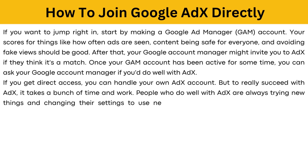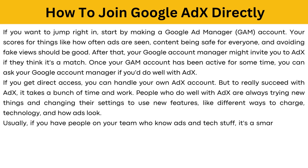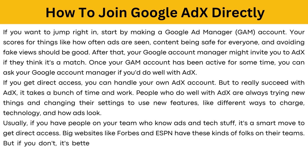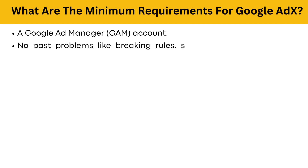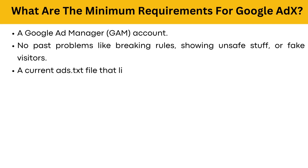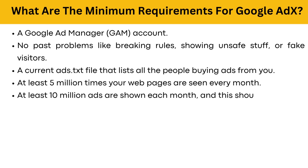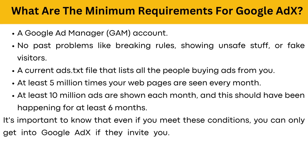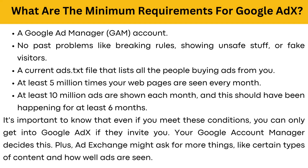People who do well with AdX are always trying new things and changing their settings to use new features like different pricing technology and how ads look. Usually, if you have people on your team who know ads and tech stuff, it's a smart move to get direct access — big websites like Forbes and ESPN have these kinds of folks on their team. But if you don't, it's better to use a Google Partner. The minimum requirements for Google AdX include: a Google Ad Manager account, no past problems like breaking rules or fake visitors, a current ads.txt file, at least 5 million website visits per month, and at least 10 million ads shown each month for at least 6 months. Even if you meet these conditions, you can only get into AdX if they invite you — your Google Ad Account Manager decides this. AdExchange might also ask for additional things like certain types of content and viewability standards.